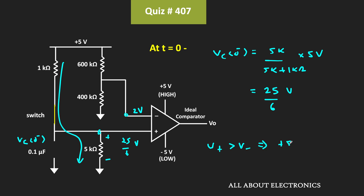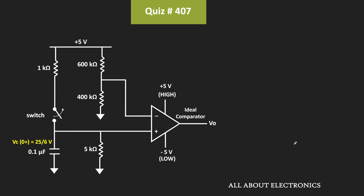The output of the comparator was +5V. At t = 0, the switch was opened. Therefore, the capacitor will now discharge through the resistor. Gradually, the voltage at the non-inverting terminal will reduce, and at the point when it becomes less than 2V, the output of the comparator will become low.